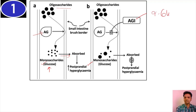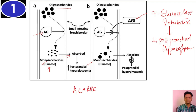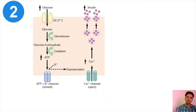So we have drugs which inhibit this alpha-glucosidase, called alpha-glucosidase inhibitors. The main function of alpha-glucosidase inhibitors is that they prevent postprandial hyperglycemia. An example of this class of drug is acarbose. This is the first class of drug, classified as alpha-glucosidase inhibitors.